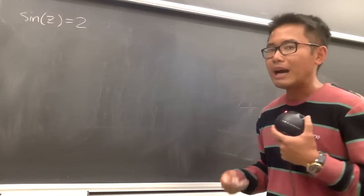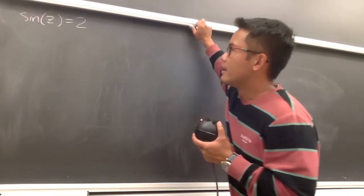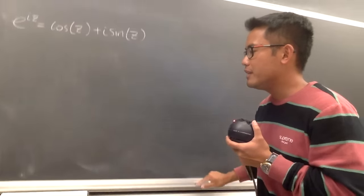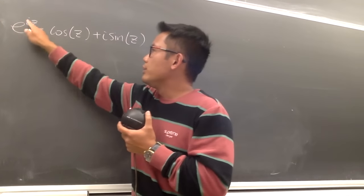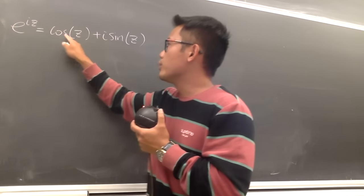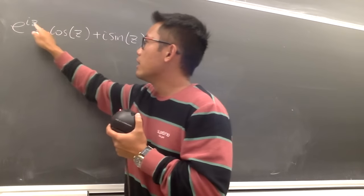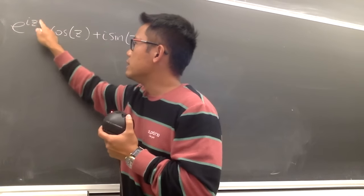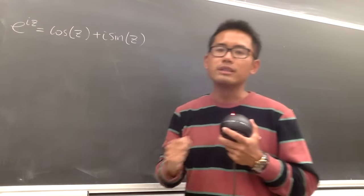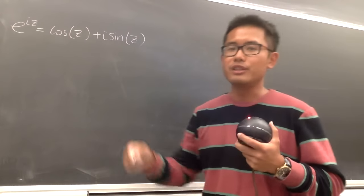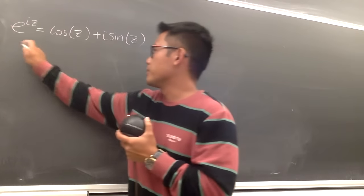To deal with this, I first need to give you a new definition for sine. Let's look at Euler's formula: e to the iz equals cosine z plus i sine z. The input is z. This is the famous Euler's formula — if you want to see the proof, check the video in the description.